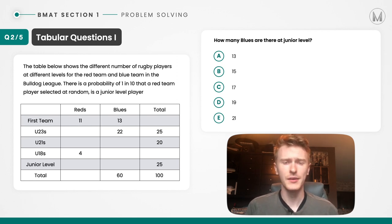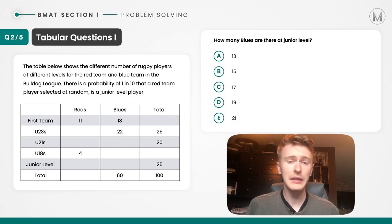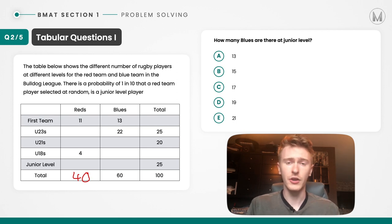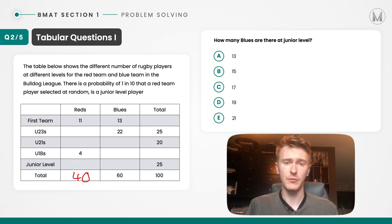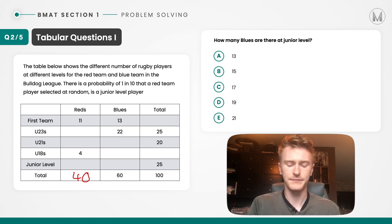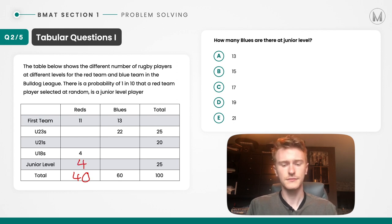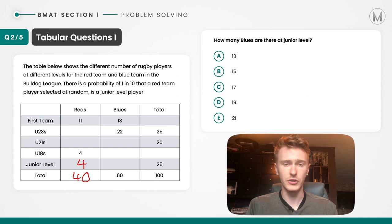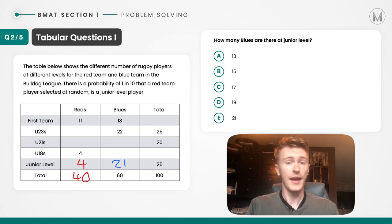With these questions where there are blanks in the table, it can be good to fill in the blanks as you read the table. We've got 100 as the total and 60 blue players — that means there must be 40 red players. Given that total, and knowing the probability of junior level players is one in ten, there must be 4 junior level players so that 4 divided by 40 equals one tenth. We then see there's a total of 25 altogether. We know there are 4 red team players at junior level, so there must be 21 blue team players at junior level. So the answer here is E.